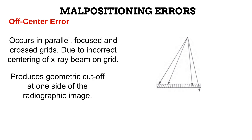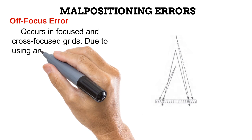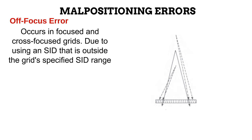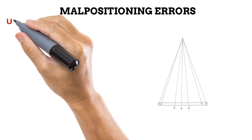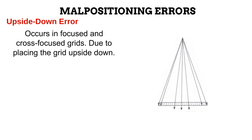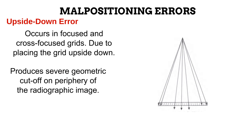Next is the off-focus error, which occurs in focused and cross-focused grids. Different focused grids are made for different source-image distances. If you use a focused grid at an SID it is not designed for, you get the off-focus error. For example, a focused grid labeled for use at 90 to 130 centimeters would produce an error if used below 90 cm or above 130 cm. An off-focus error appears as geometrical cutoff along the sides of the image. Lastly, the upside-down grid error occurs in focused and cross-focused grids, which have a front and a back. When placed upside down, severe geometrical cutoff is seen on the sides of the image.